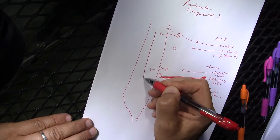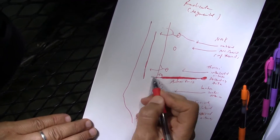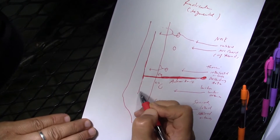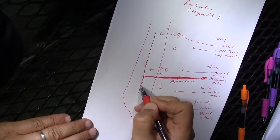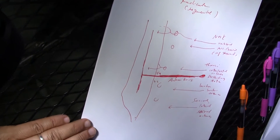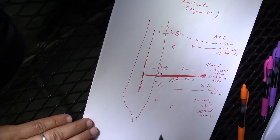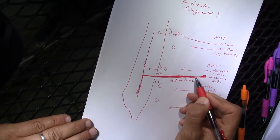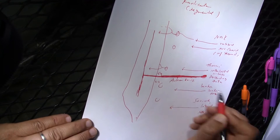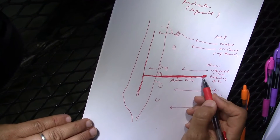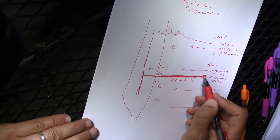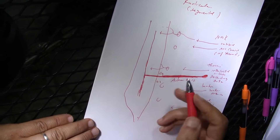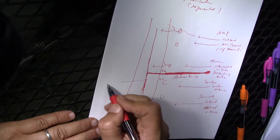The artery of Adamkiewicz is the biggest radicular artery, coming from the descending aorta at approximately the T9 to L1 segment. It anastomoses with and supplements the anterior spinal artery, giving additional blood supply to the lower part of the spinal cord. This is the largest radicular artery, supplementing the anterior spinal artery from the descending aorta.